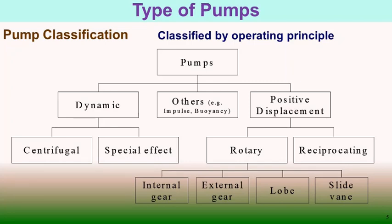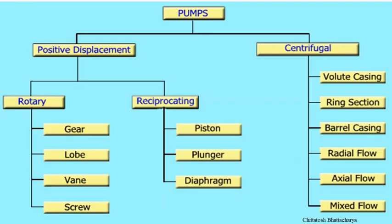Pump classification can be arranged as positive displacement pumps and centrifugal pumps. Positive displacement pumps may be rotary — further divided into gear pump, lobe pump, vane pump, and screw pump — or reciprocating, which may be piston type, plunger type, and diaphragm type. Centrifugal pumps have volute casing, ring sections, and barrel casing, and may be radial flow, axial flow, or mixed flow.